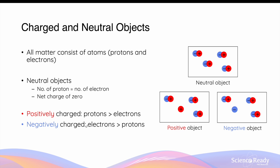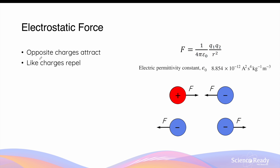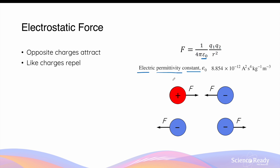In summary, whether an object is neutral, positively charged, or negatively charged depends on the number of protons and electrons it contains. Electrostatic force is a force present between charges or charged objects. Opposite charges always attract, while like charges repel. The exact equation used to calculate the magnitude of this force is: F = (1 / 4πε₀) × (q1 × q2) / r², where ε₀ is the electric permittivity constant of free space, q1 and q2 are the magnitudes of the charges, and r is the distance between the centers of the charges.